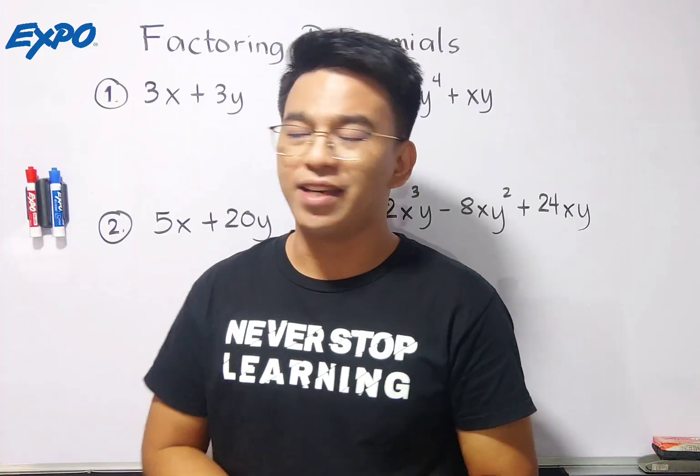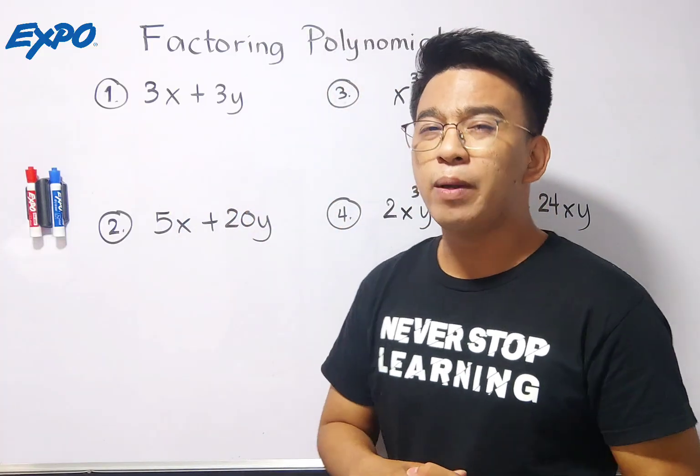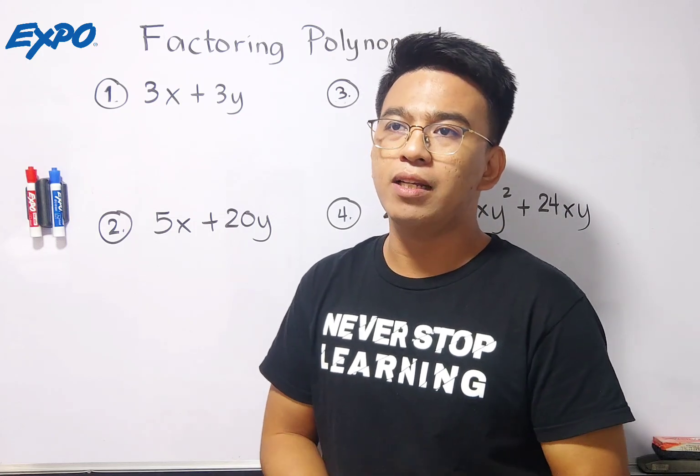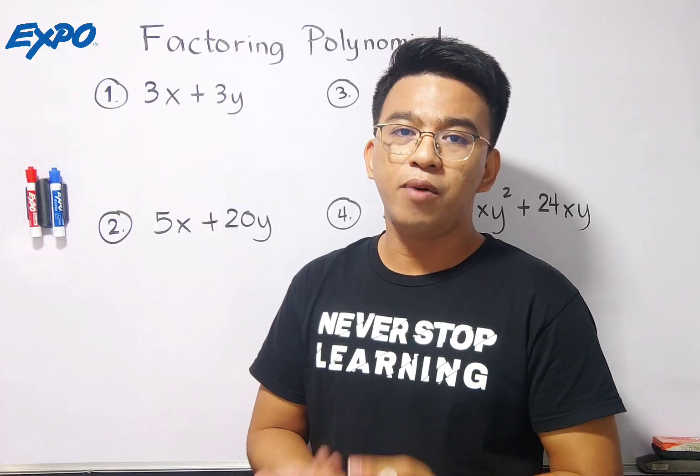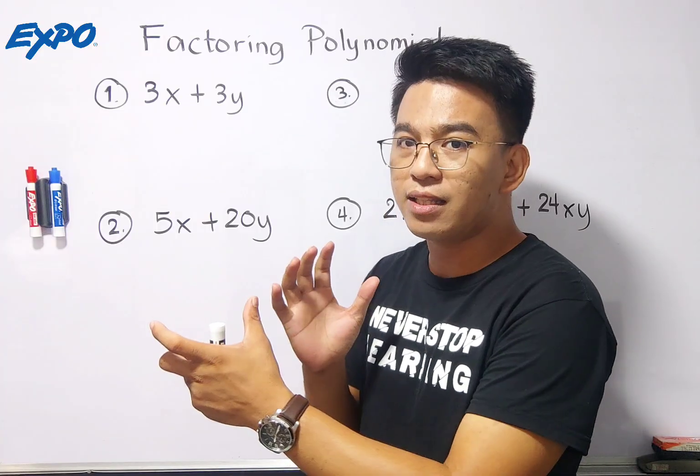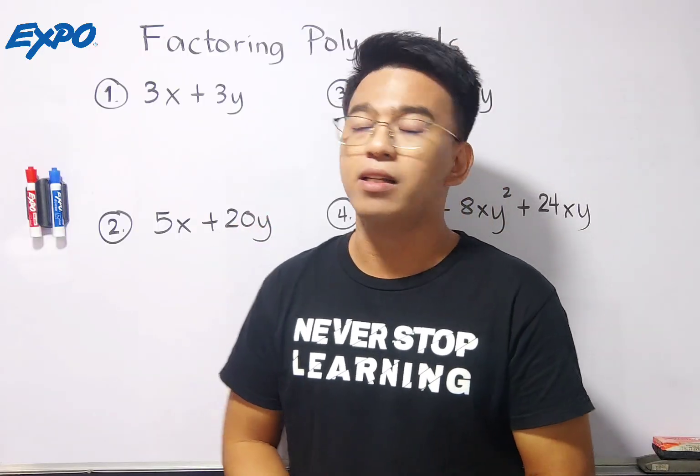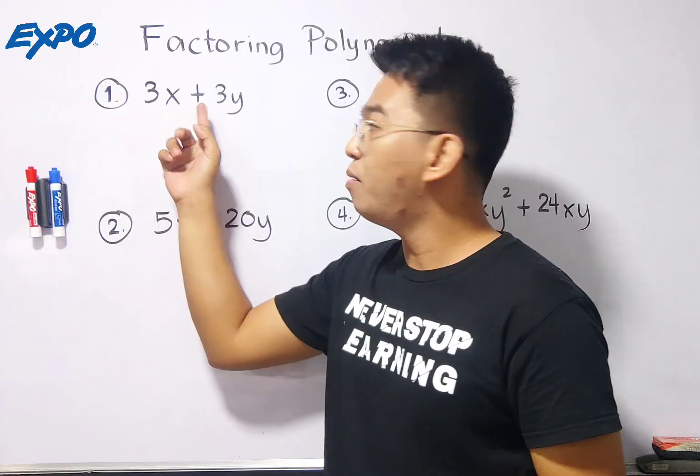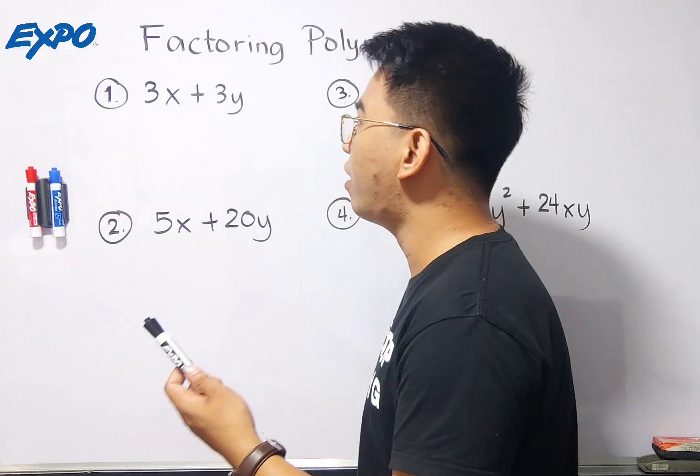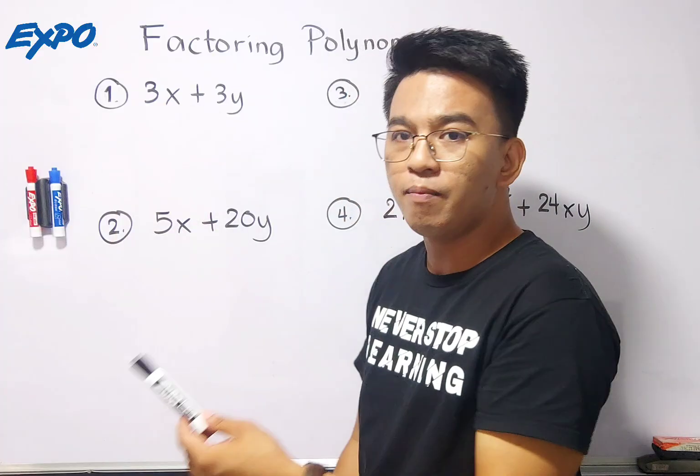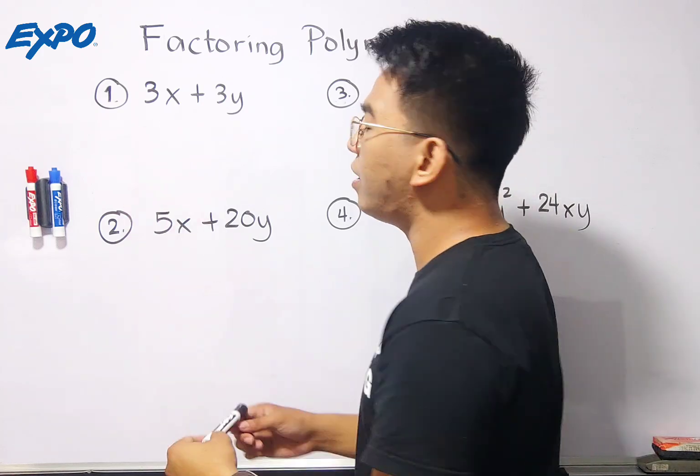let's do this topic. So in number one, we have 3x plus 3y. Basically guys, when we say factoring or factoring a polynomial, it is the reverse process of multiplying polynomials. We will try to extract its common factor so that we can express or expand the given polynomial. So what we have here is 3x plus 3y. The technique I use when trying to factor out polynomials, I first think, what is common between the two terms?